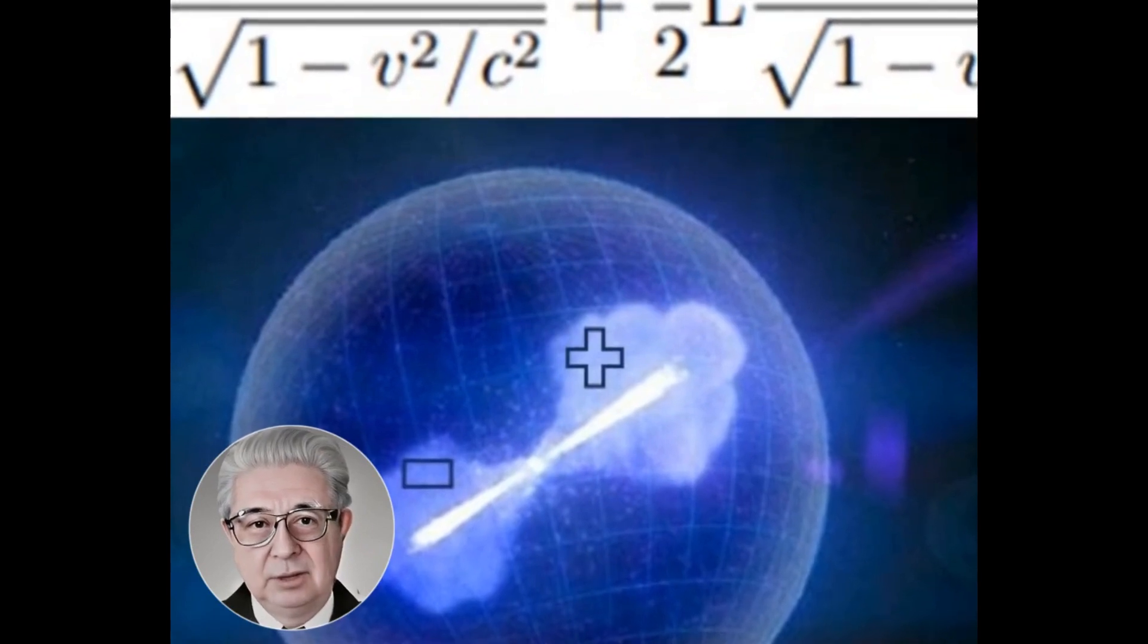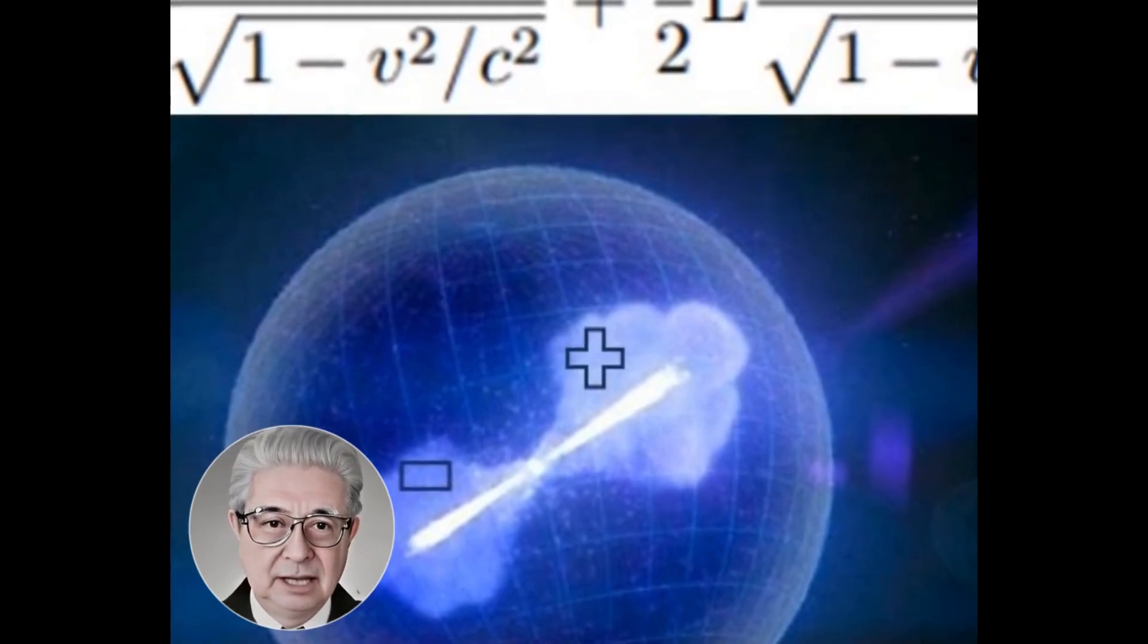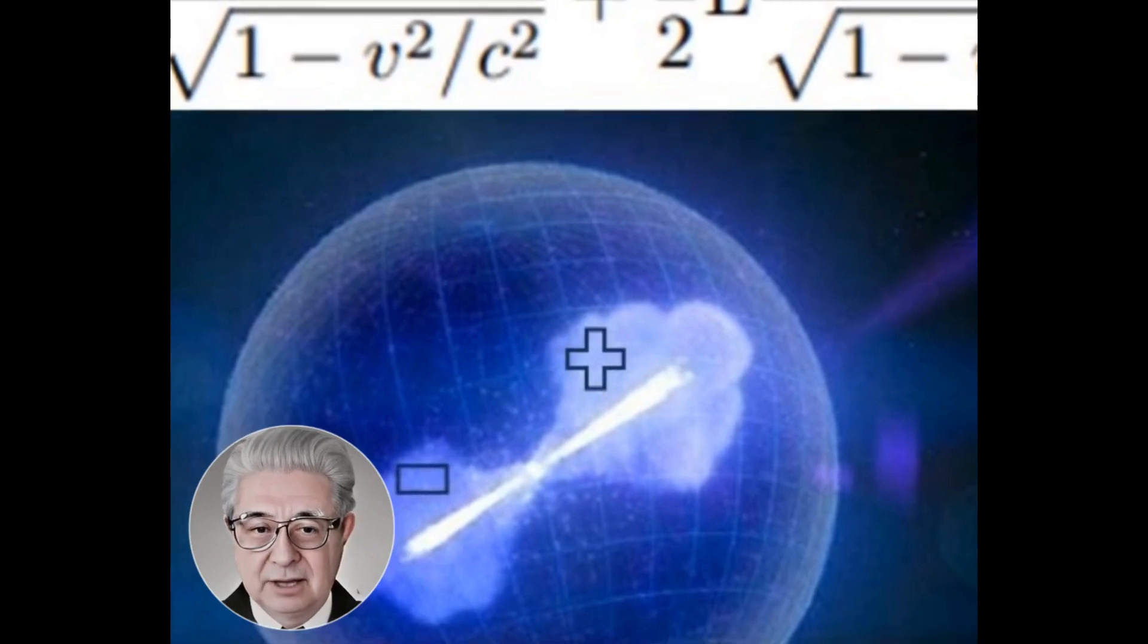This is because energy dilates in the moving coordinate system, resulting in a decrease in the energy of the light emitted in the direction of motion.